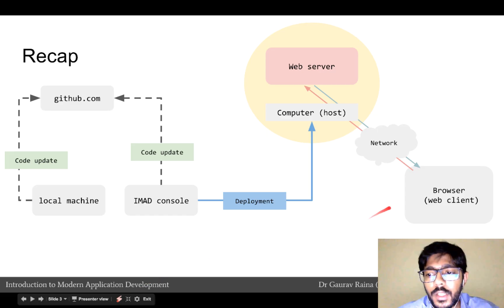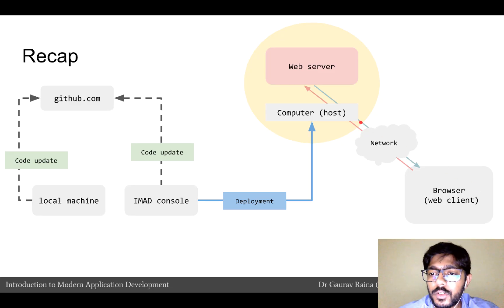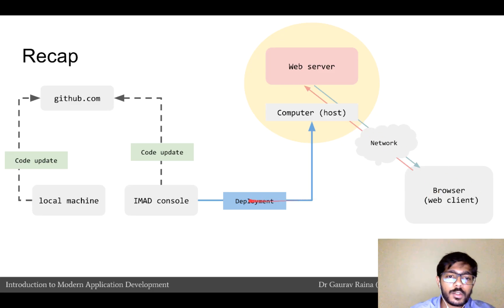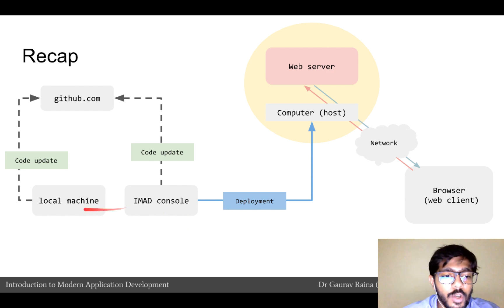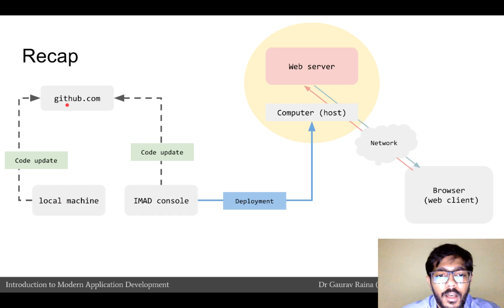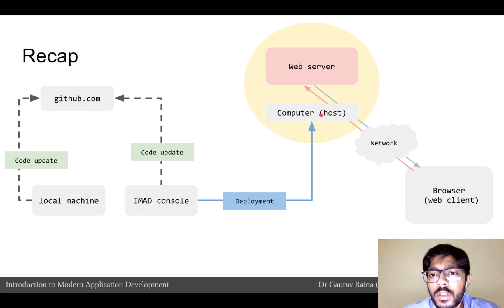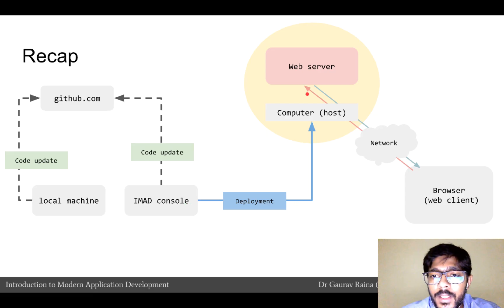In the first week we understood that a browser can make requests to a web server through a network and receive responses from the server. We also looked at how code can be deployed — we use either the IMAD console or the local machine for development. We save our source code on a git repository on GitHub.com. After we have written code, we use the IMAD console to deploy our source code onto the computer which hosts our web server software. The IMAD console takes care of deployment and restarting the web server with the latest changes.